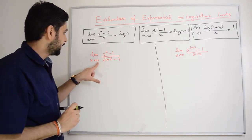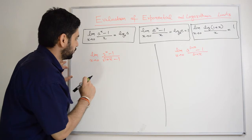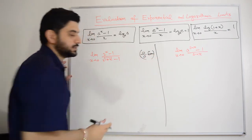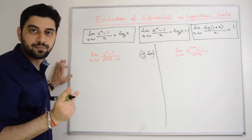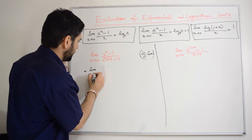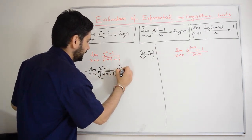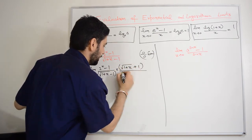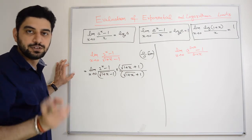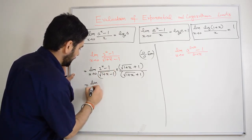Next question: limit x tending to 0, 2 raised to power x minus 1, divided by root(1 plus x) minus 1. Putting x = 0 gives 0/0 form. The denominator has a square root term, so we first rationalize. Multiply numerator and denominator by root(1 plus x) plus 1, giving limit x tends to 0: (2^x minus 1) into (root(1 plus x) plus 1), divided by (root(1 plus x))² minus 1².